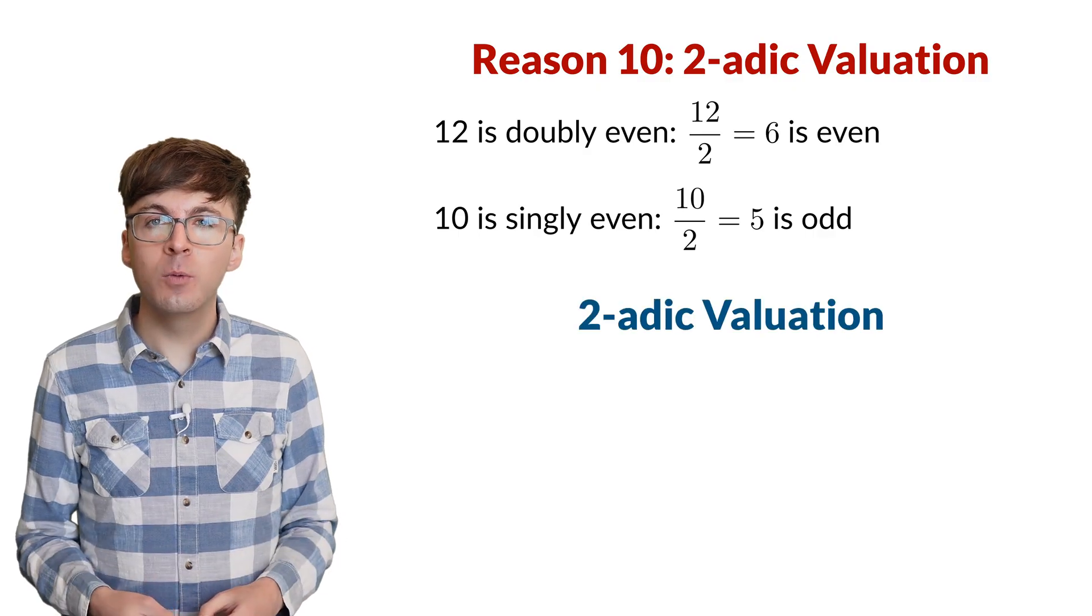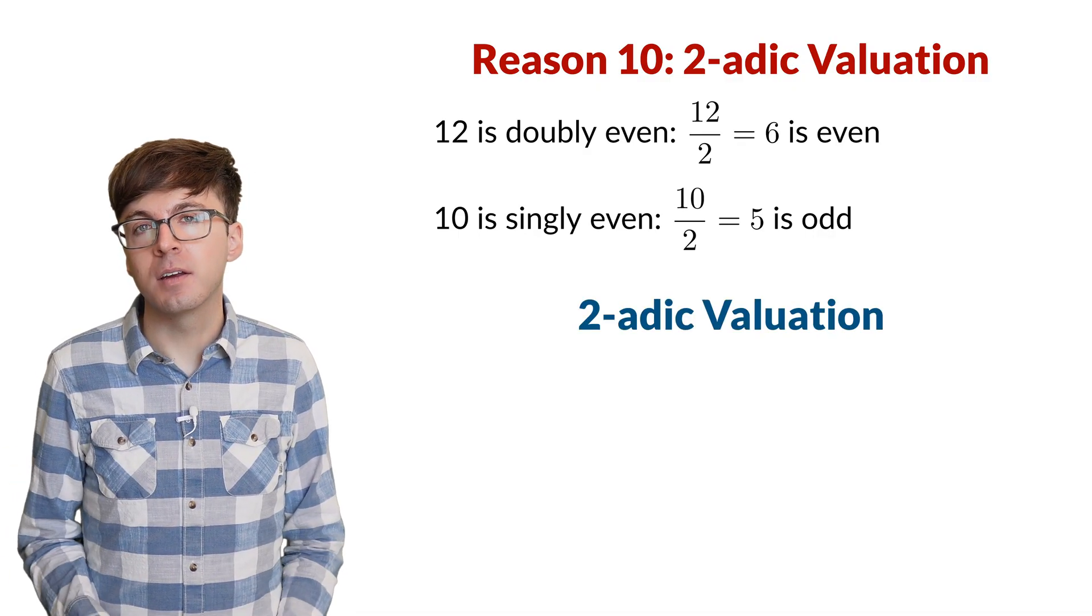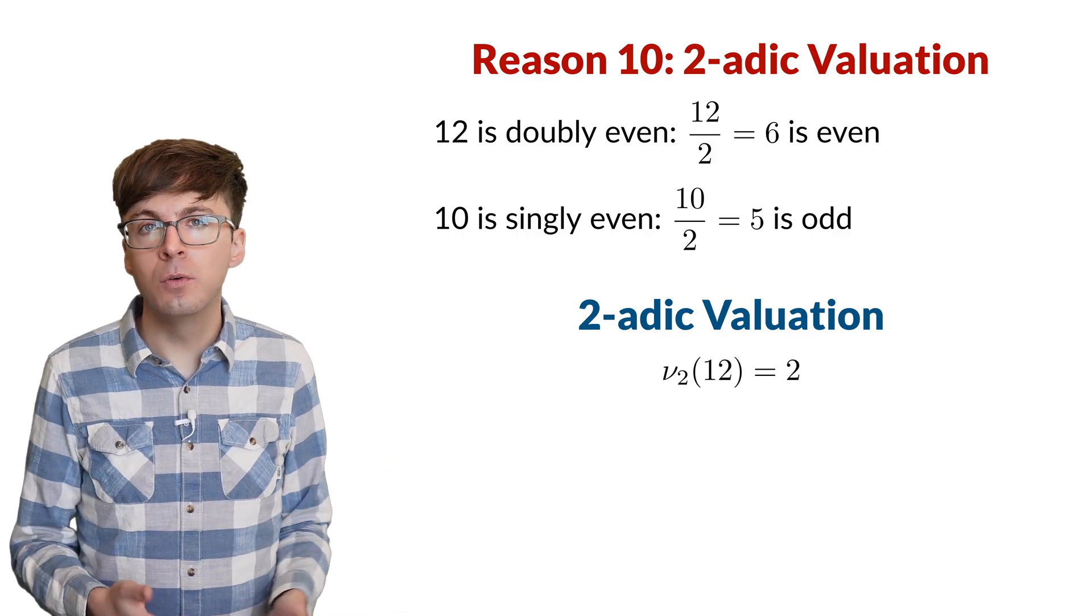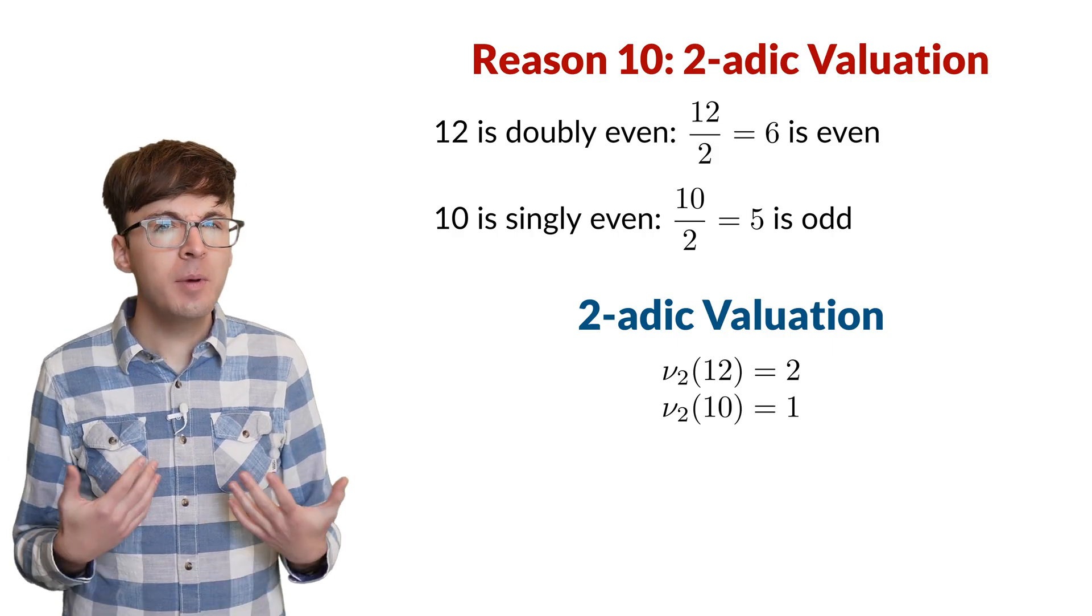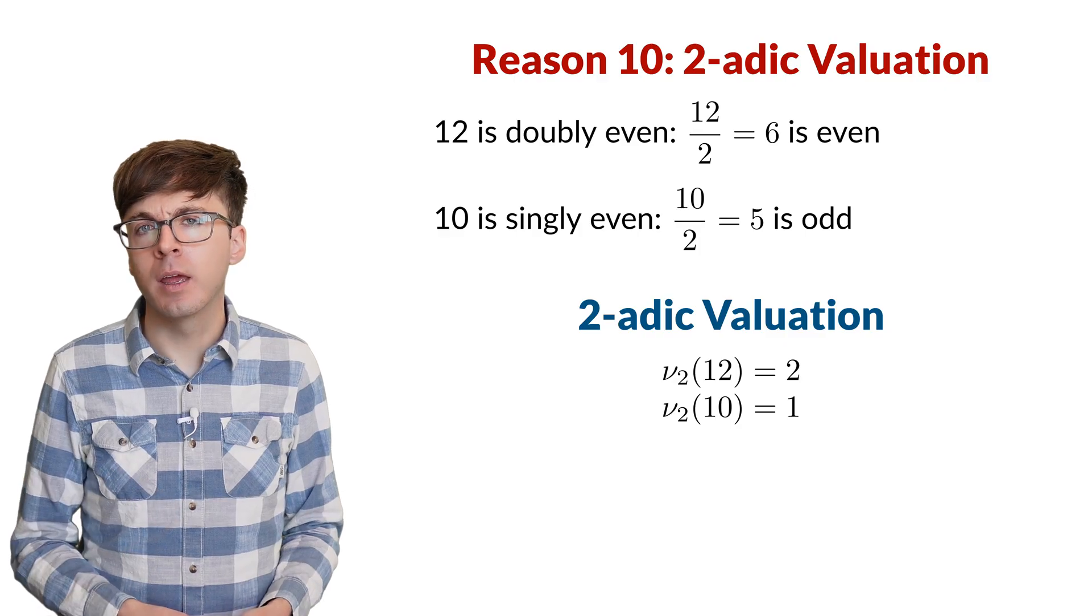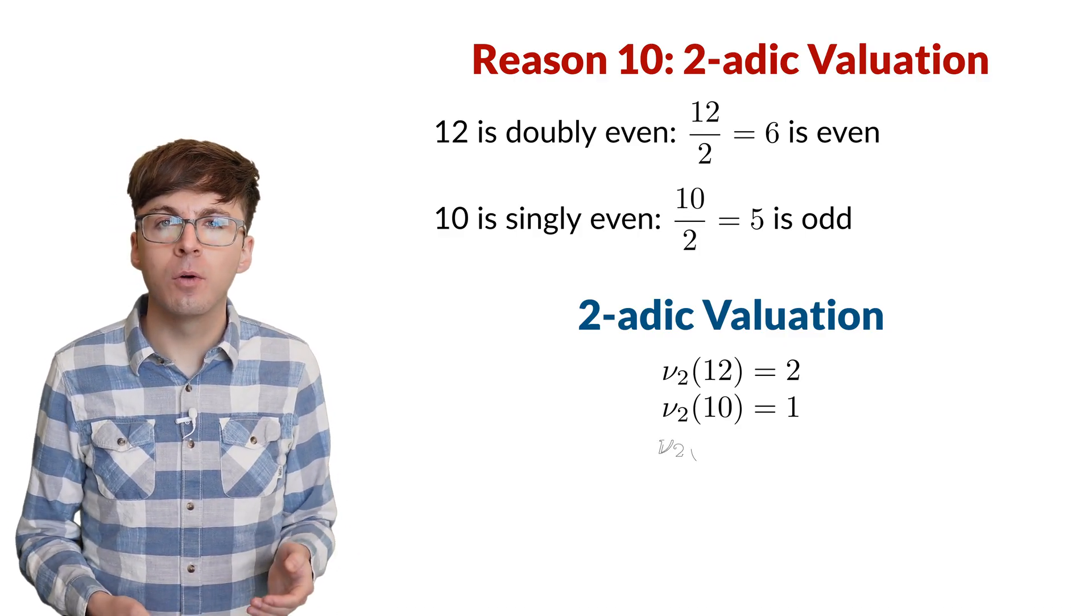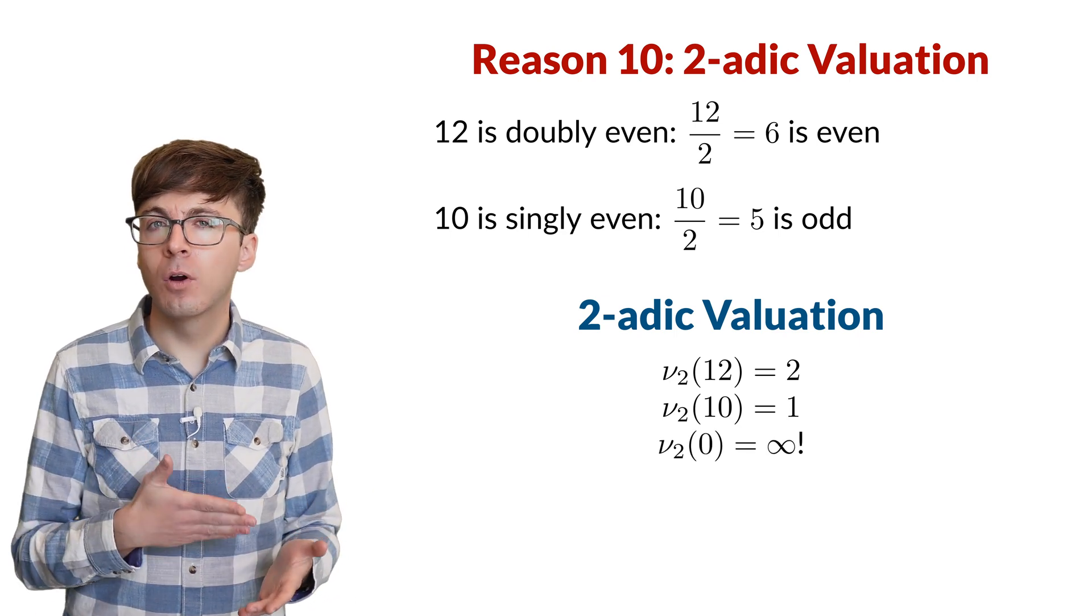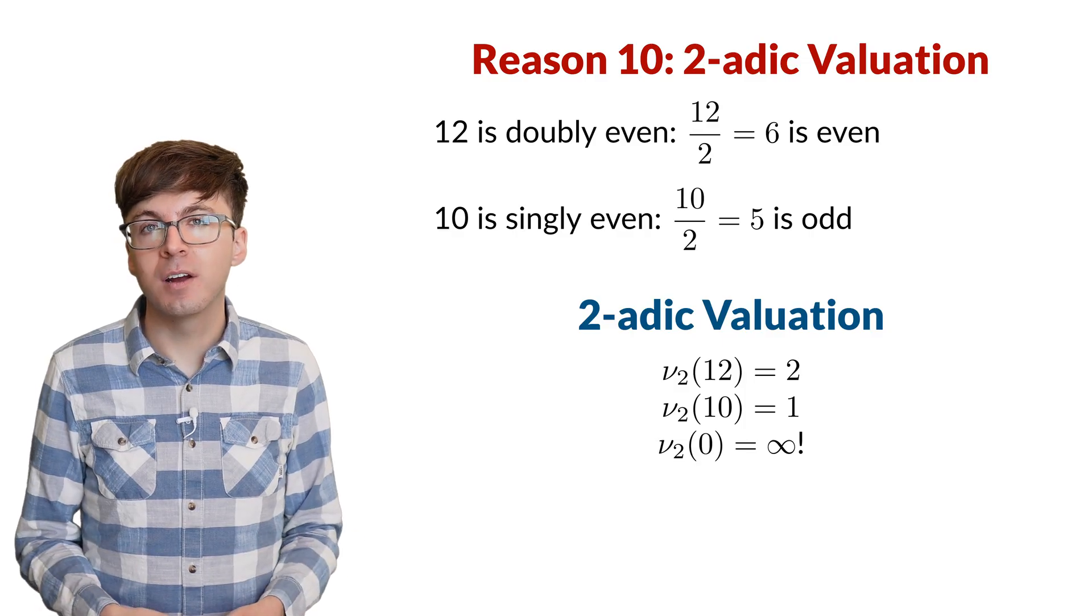The 2-adic valuation of an integer tells us the highest power of 2 that divides that number. The 2-adic valuation of 12 is 2, and the 2-adic valuation of 10 is 1. But what about 0? 0 can be divided by 2 over and over again without end. We can define the 2-adic valuation of 0 to be infinity. So not only is 0 even, it's infinitely even, according to its 2-adic valuation.